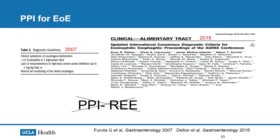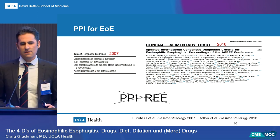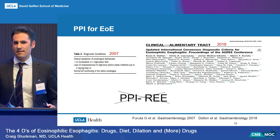PPIs for EOE have been around for a long time. Back in 2007, patients with suggestive symptoms would be started on high-dose PPI for about two months. If they got better, they were diagnosed with PPI-responsive esophageal eosinophilia, the so-called PPI-RE. If they did not get better, they were diagnosed as having EOE. This was unusual in medicine - using a medicine to make a diagnosis. Thankfully, at the 2018 AGREE conference, researchers determined that the term PPI-RE should no longer exist and that PPI therapy should be used equally as a potential first-line therapy for EOE.